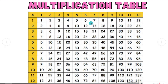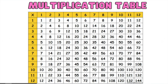Continue counting by 5s, 6s, 7s, 8s, 9s, 10s, 11s, and 12s. Go down and then also go across, making sure you have every number filled in. Let's go ahead and look at a short video on how you can use this table to multiply.